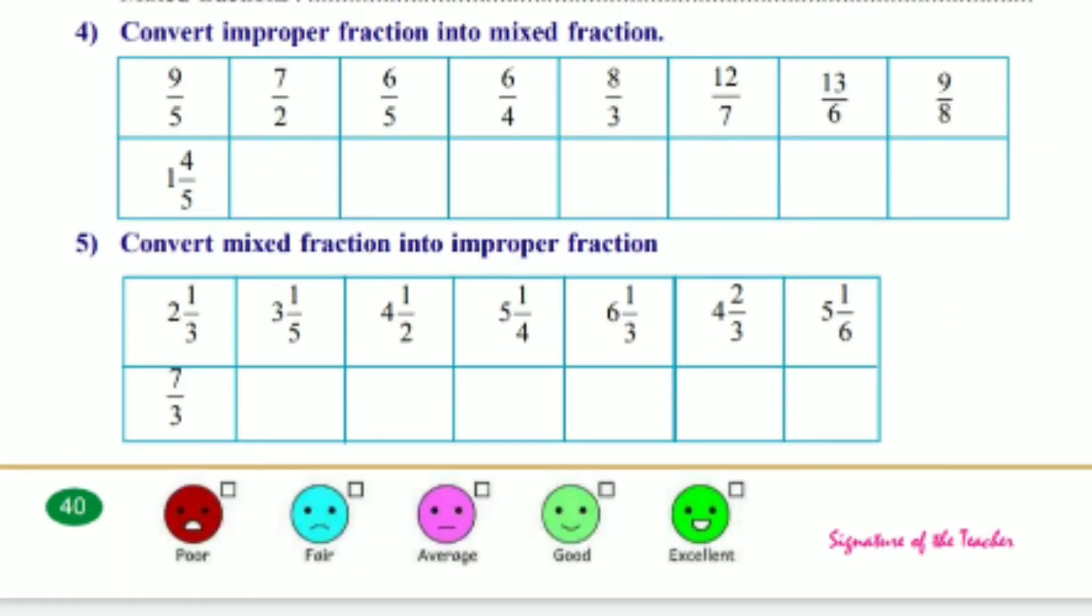Fourth one, Convert Improper Fraction. 4 by 5 equals 1, 4 by 5. 7 by 2 equals 3, 1 by 2. 6 by 5 equals 1, 1 by 5. 6 by 4 equals 1, 2 by 4. 8 by 3 equals 2, 2 by 3. 12 by 7 equals 1, 5 by 7. 13 by 6 equals 2, 1 by 6. 9 by 8 equals 1, 1 by 8.